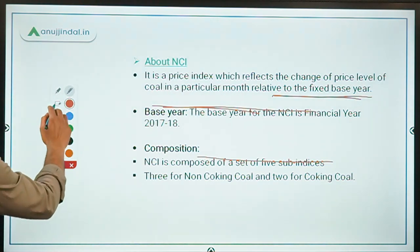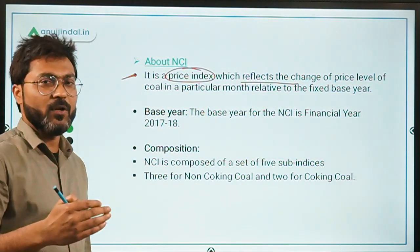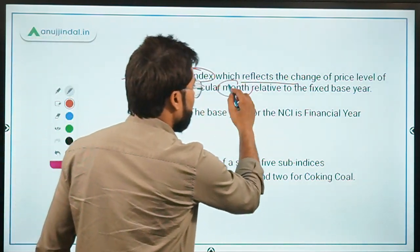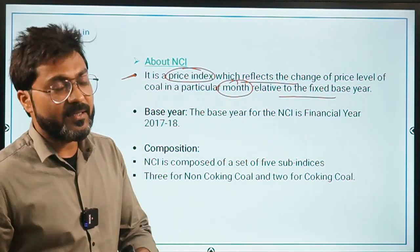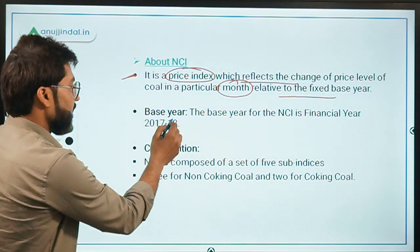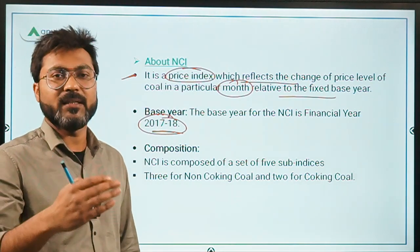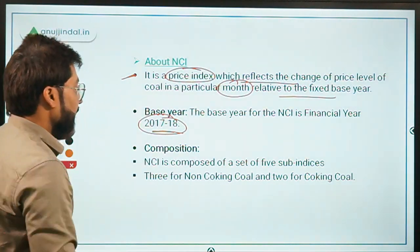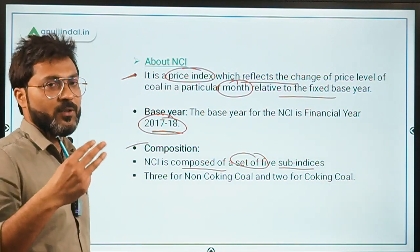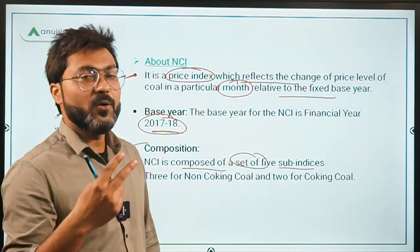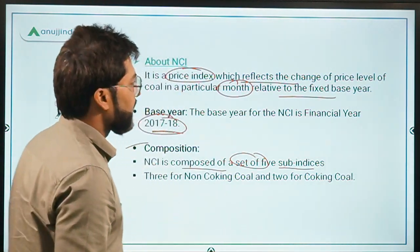Talking more about the National Coal Index: it is basically a price index which reflects the change in price level of coal in a particular month with respect to a fixed base year. That fixed base year is financial year 2018. It is composed of a set of five sub-indices — three from the non-coking coal and two from the coking coal. That is about the National Coal Index.